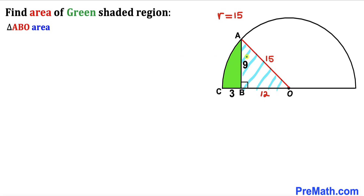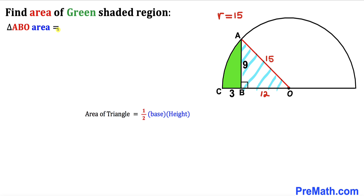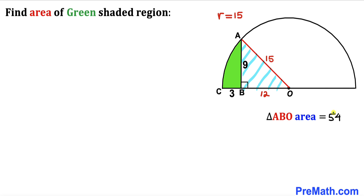Let's calculate the area of right triangle ABO using the formula: area equals one half times base times height. Our base is 12 and height is 9, so the area is one half times 12 times 9, which gives us 54 square units.